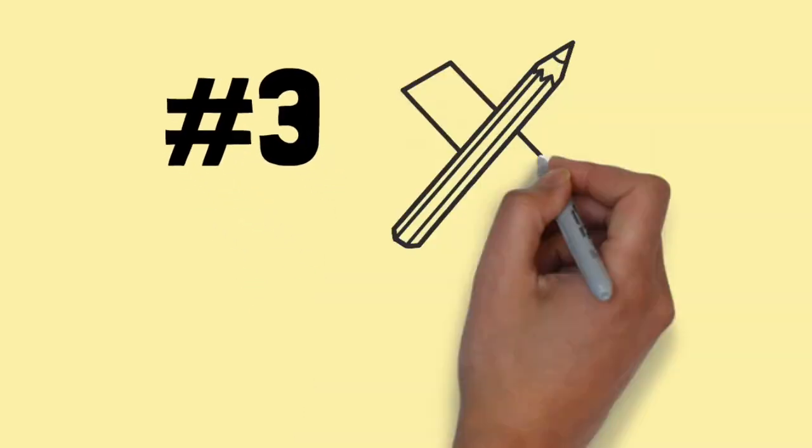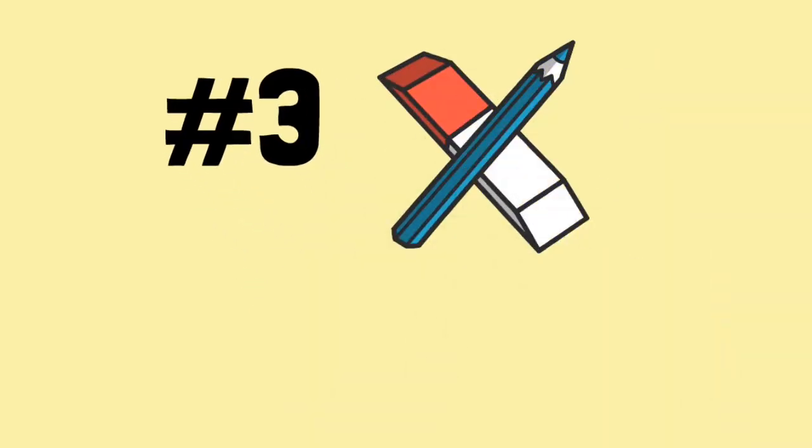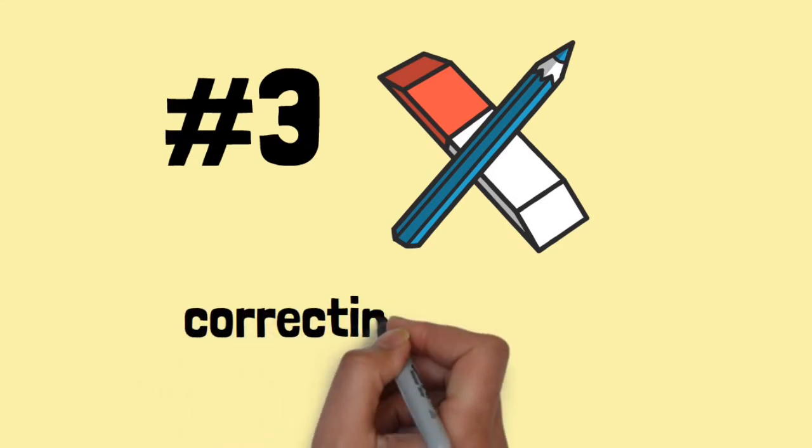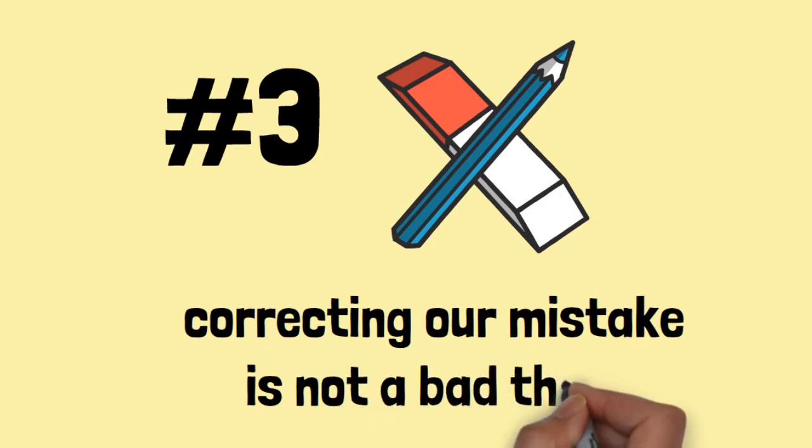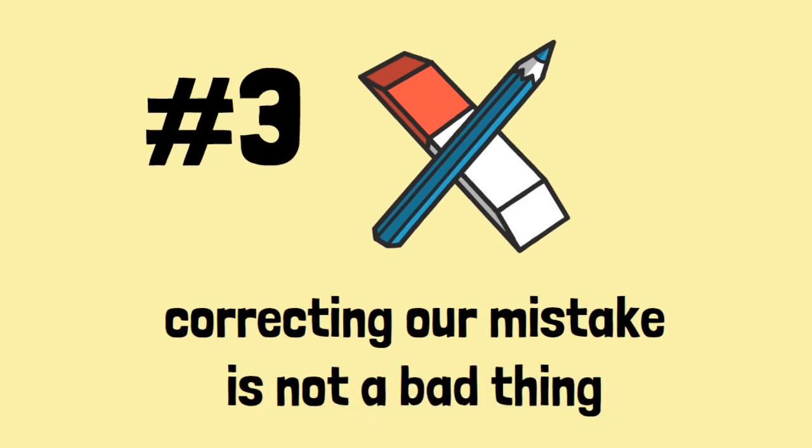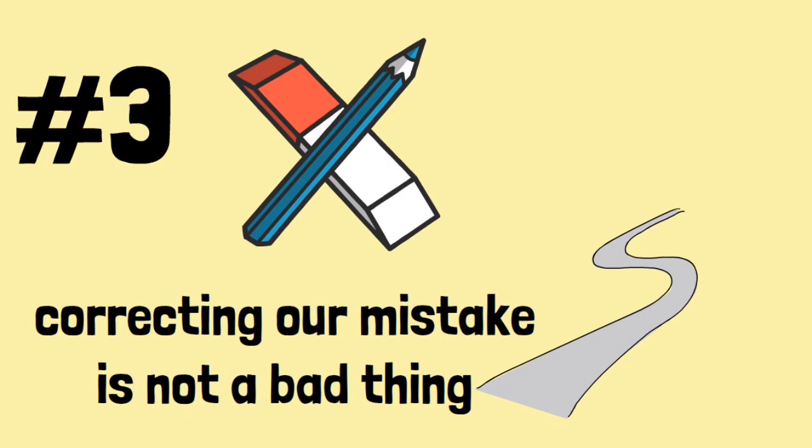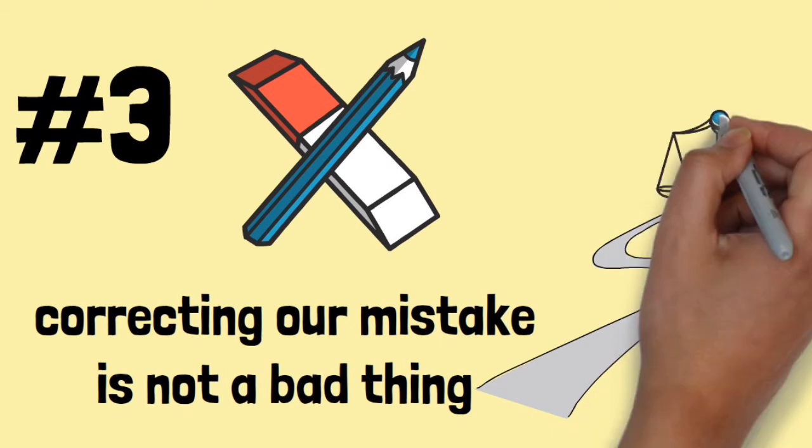Third quality, the pencil always allows us to use an eraser to rub out any mistakes. This means that correcting something we did is not necessarily a bad thing. It helps to keep us on the road to justice.